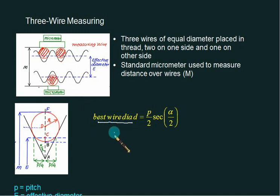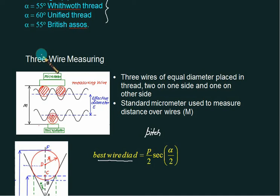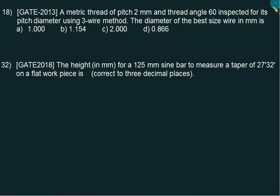The best wire diameter D can be obtained by using P/2 × sec(α/2), where alpha is the thread angle and P stands for pitch. Alpha you can recall: Whitworth 55°, Unified 60°, British 55°. For effective diameter, don't remember complex formulas. Just find the best wire diameter: P/2 × sec(α/2). That's sufficient for GATE.